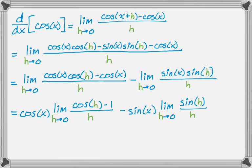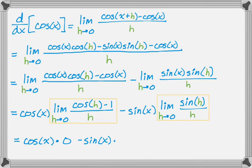Knowing those five things at the beginning allows us to do this. So it's cosine of x times the famous limit that is 0, and then minus sine of x times the famous limit that is 1. So overall, we're left with just negative sine of x. The derivative of cosine of x is negative sine of x. That's the derivative of sine and cosine. Hope you found this helpful. Good luck.